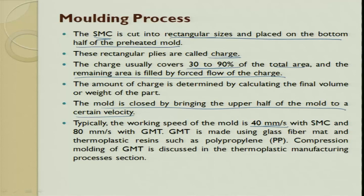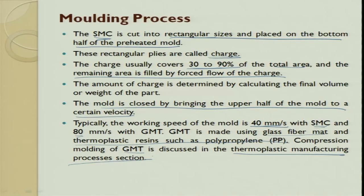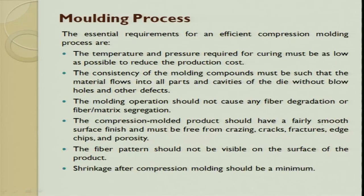GMT is made from glass fiber mat and thermoplastic resin such as PP; its compression molding will be discussed in the thermoplastic manufacturing section. The three key process parameters — temperature, pressure, and time — play a very important role. Temperature and pressure required for curing must be as low as possible to reduce production cost. If temperature is not properly maintained, viscosity will be affected; if pressure is too high, proper flow will not occur.